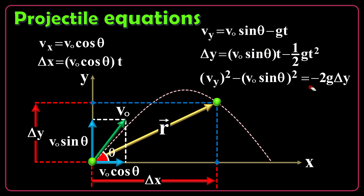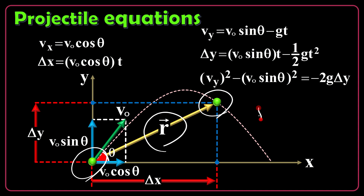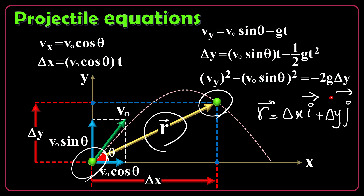I should emphasize that the position vector r is a vector starting from the initial point and ending at the final point — any arbitrary point on the trajectory. Normally, when you start from the origin, r equals delta x times the horizontal unit vector i plus delta y times the vertical unit vector j.